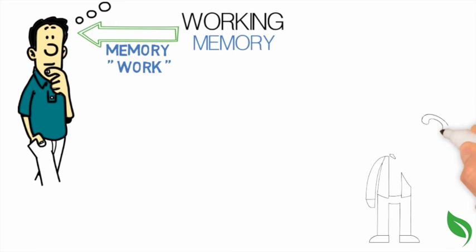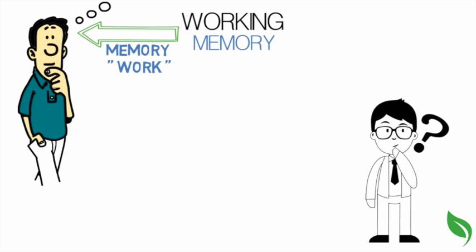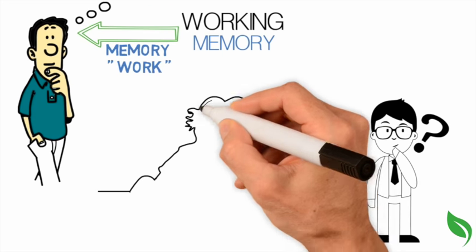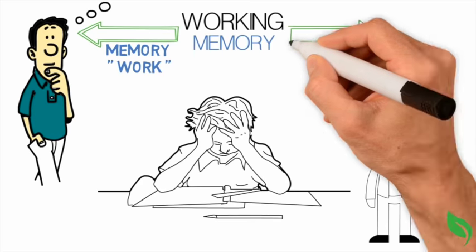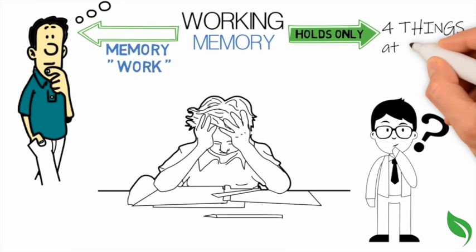People can only handle a small amount of information in their working memory at one time. We cannot think about a million things at once. In fact, we can only hold about four things in our working memory at a time.